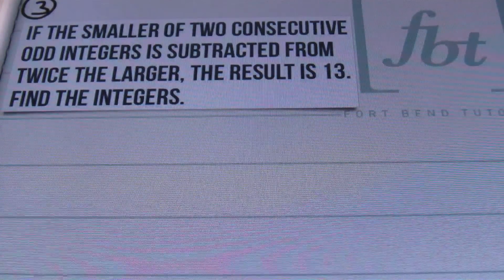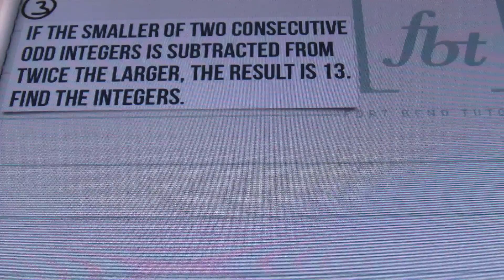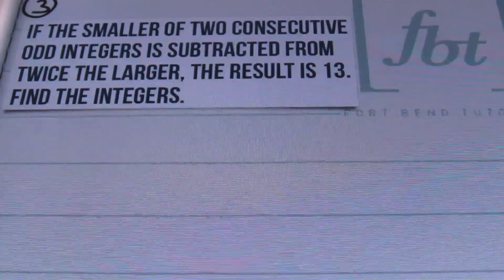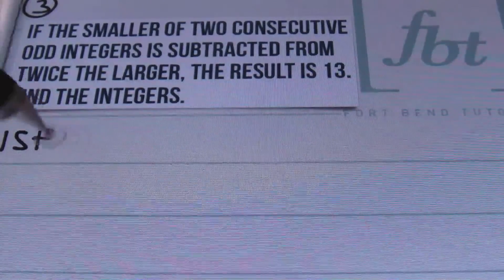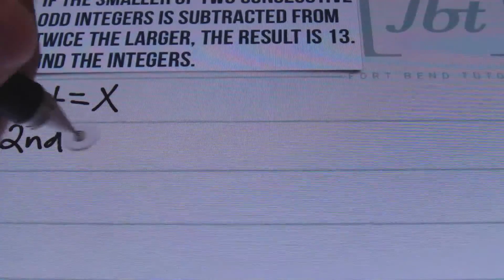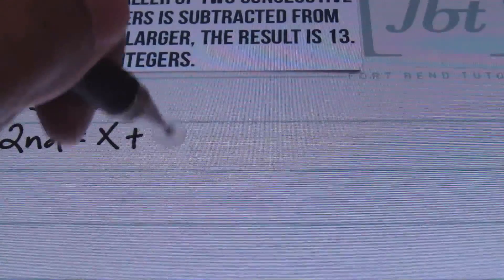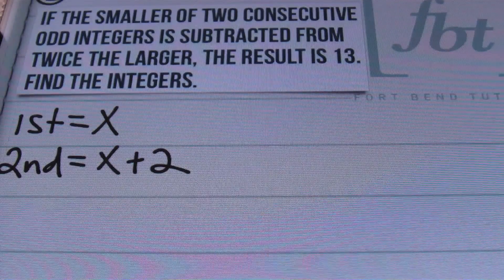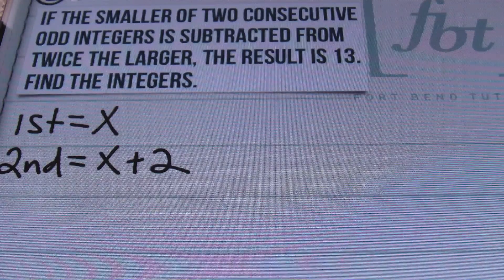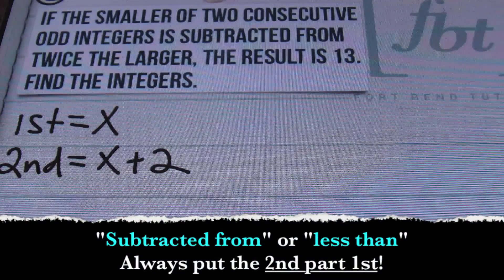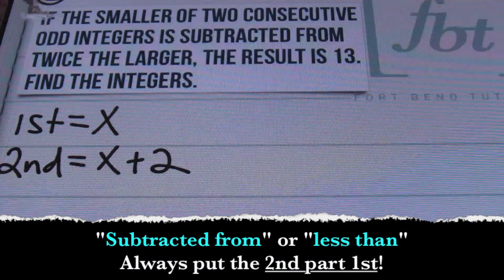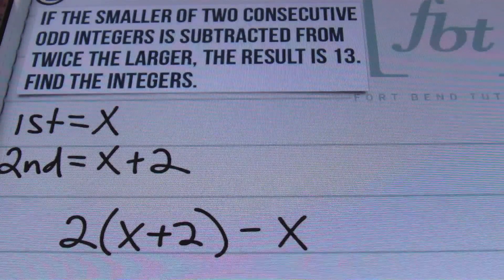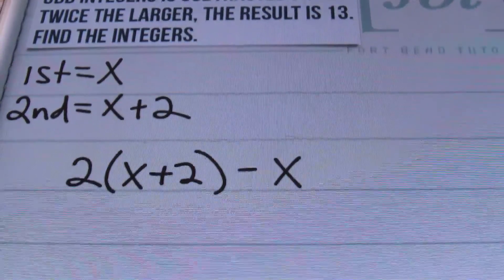If the smaller of two consecutive odd integers is subtracted from twice the larger, the result is 13. We're dealing with two consecutive odd integers, so first we define them. The first odd integer is the unknown variable X. The second, or larger, odd integer is X plus 2 — remember, they're always separated by two. Now, anytime we have the phrase 'subtracted from' or 'less than,' the second part goes first. So twice the larger is 2 times (X plus 2), minus X for the smaller, and this equals 13.